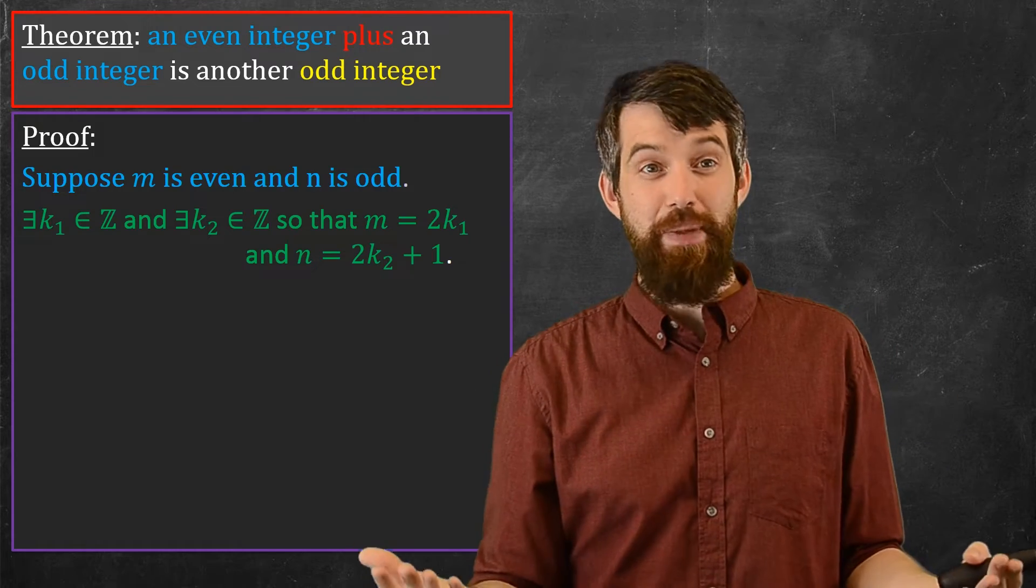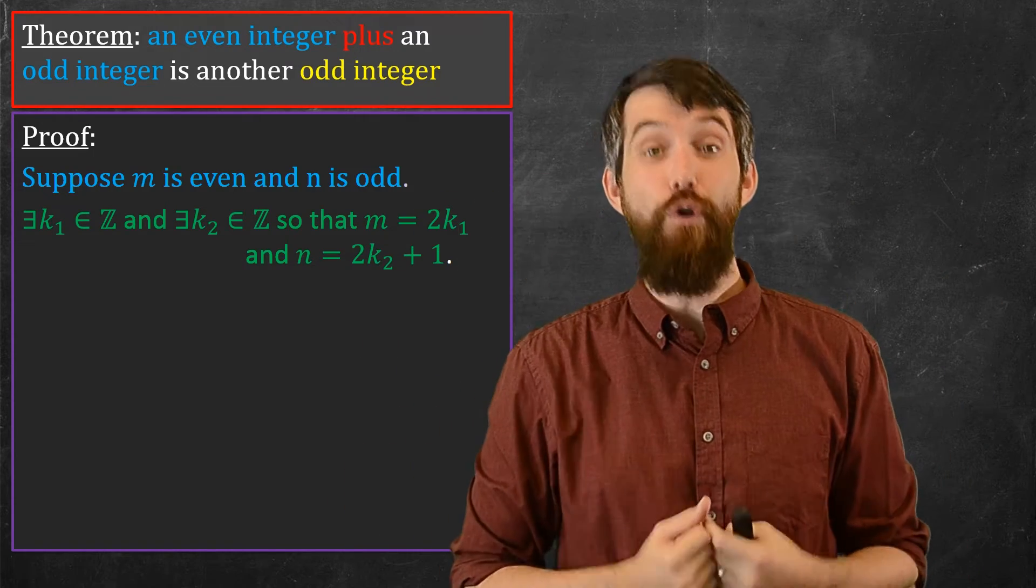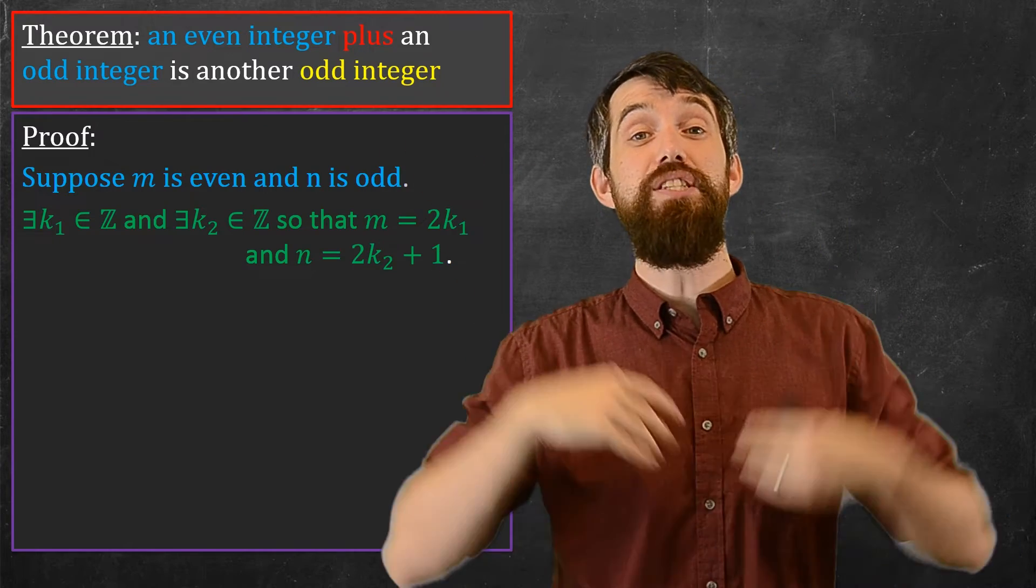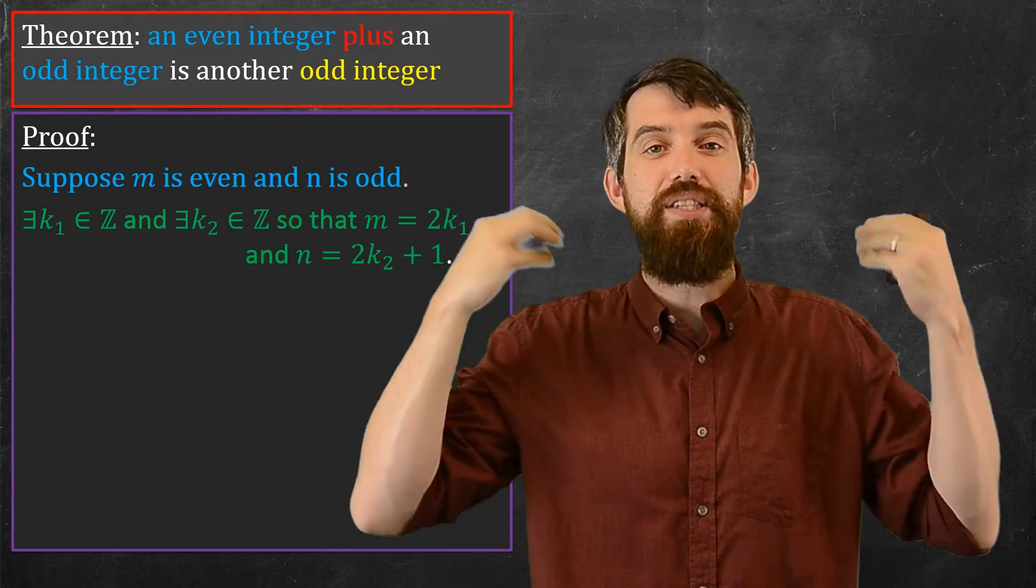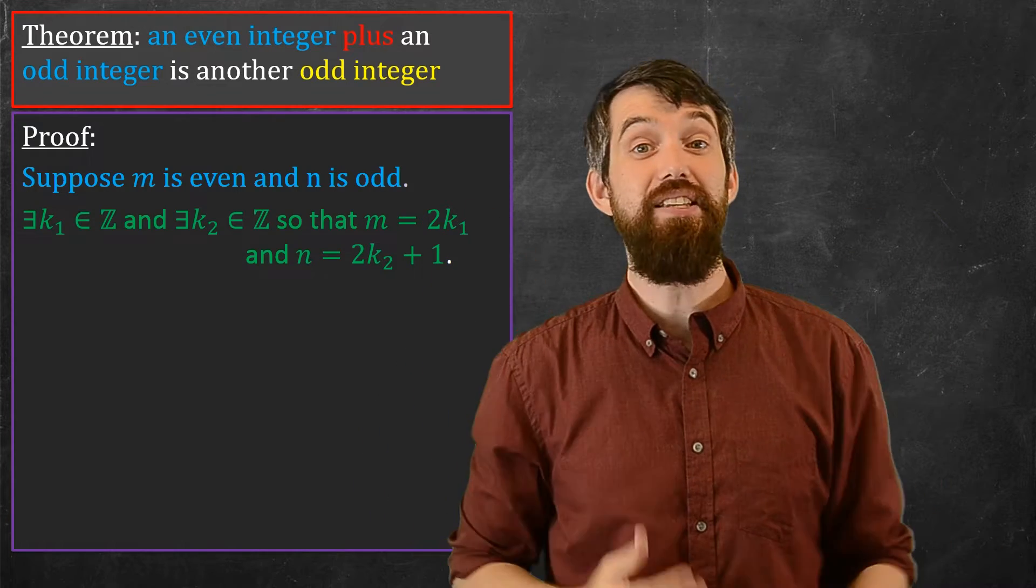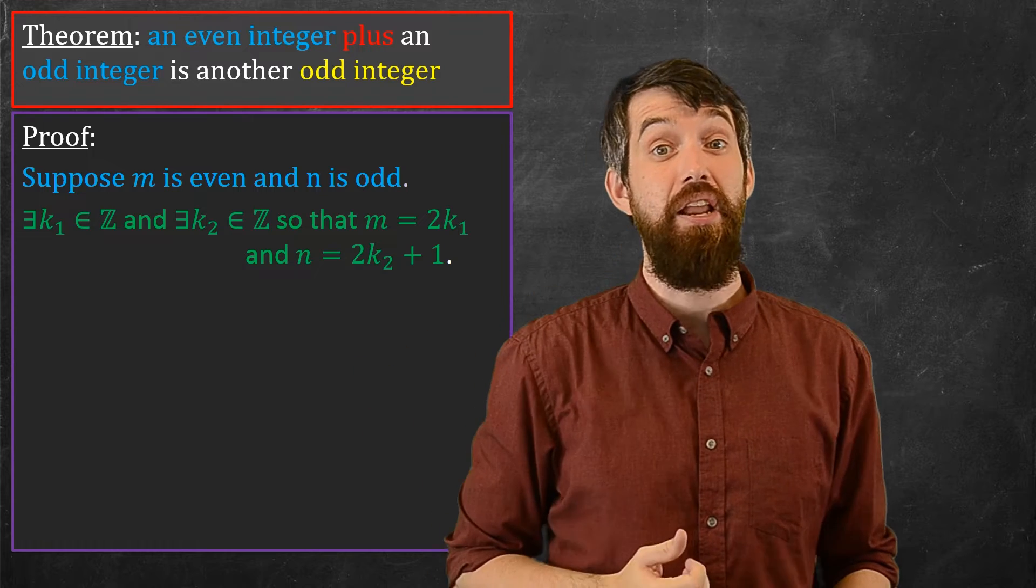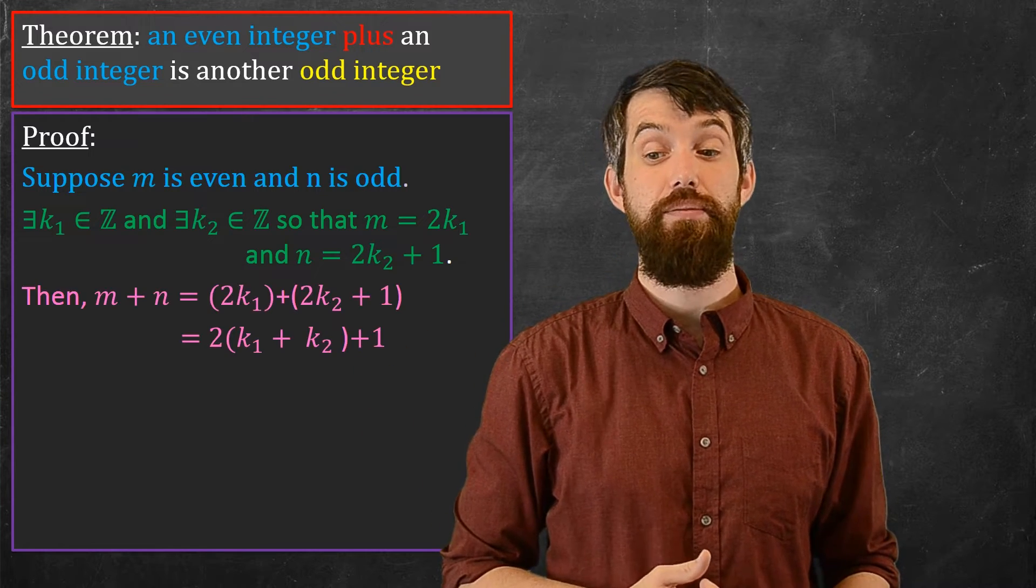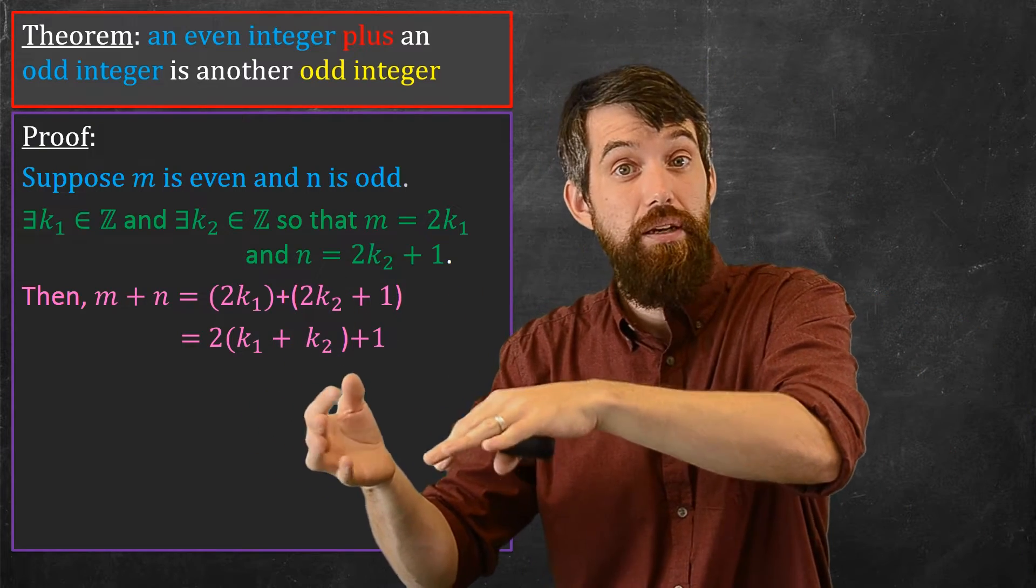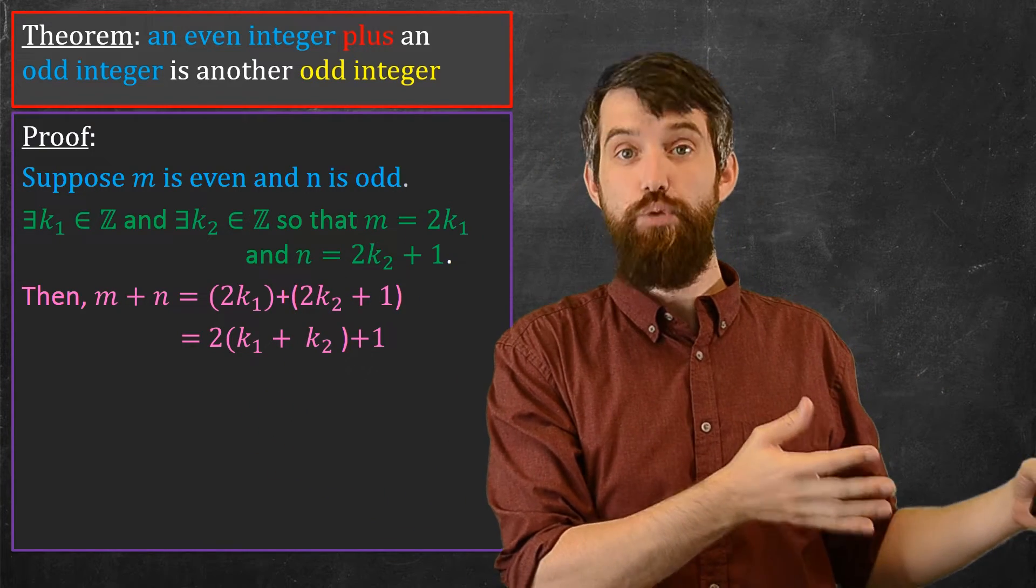Now, why do I care about this? Because now I can plug these into formulas. And in particular, the theorem that I have here asks for the sum of these two things. I'm trying to make a claim about the sum of m plus n. So I'm going to take the sum of m plus n and I'm going to substitute in precisely these definitions. So what do I get? I get m plus n here is twice k1 plus twice k2 plus 1.